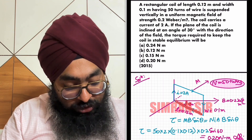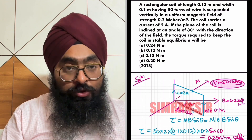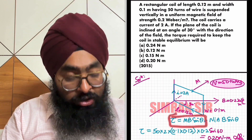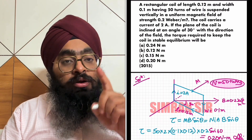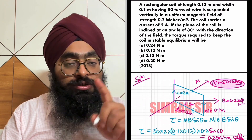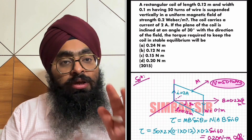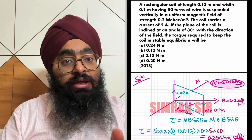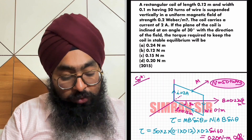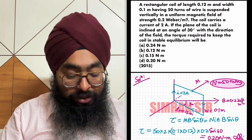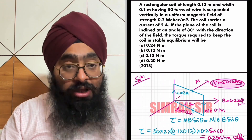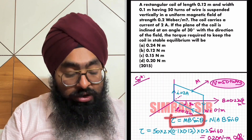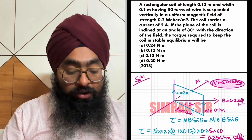This is the coil and this is the plane, which is at 30 degrees. The torque on any closed coil — or circular coil — kept in a magnetic field, when the coil is current-carrying, is given by the formula: tau equals MB sin theta, where theta is the angle.